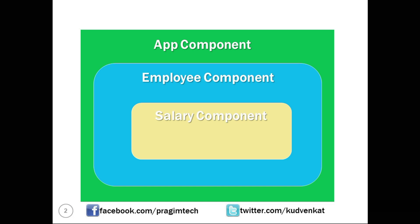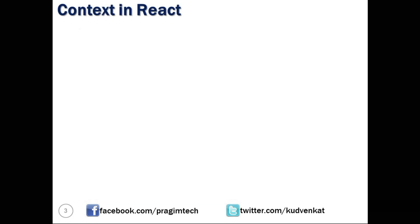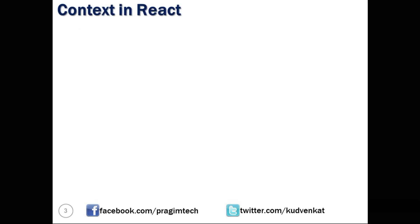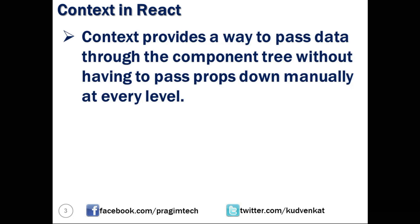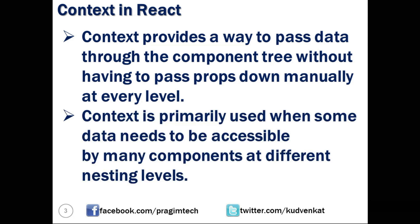In this session, we will understand how to use Context in React to pass data between components placed at different nesting levels. Context provides a way to pass data through the component tree without having to pass properties from parent to child manually at every level. Context is primarily used when some data needs to be accessible by many components at different nesting levels.